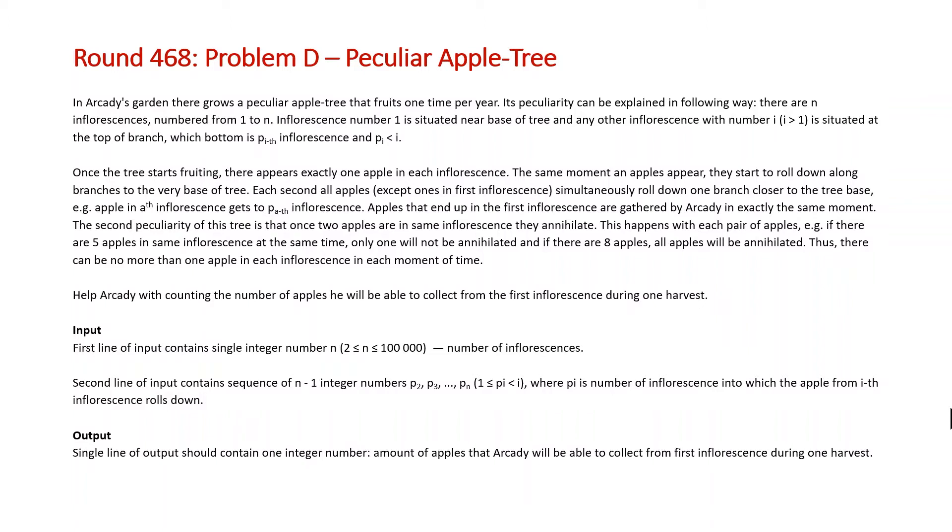So the highlights are that this tree contains what they call inflorescences and at time zero each one of these inflorescences is going to blossom an apple and from that point on the apples are going to roll down the tree and if at any point two apples collide with each other at the same inflorescence they annihilate each other.